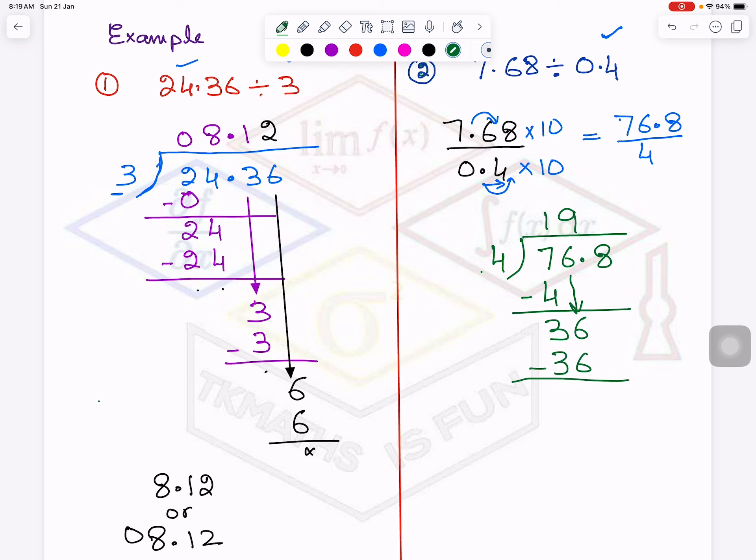4 times 9 is 36. 36 minus 36 is 0. So now I have to bring this 8 down. But before 8, there is decimal. So it will go up. 4 times 2 is 8. So my answer is 19.2.